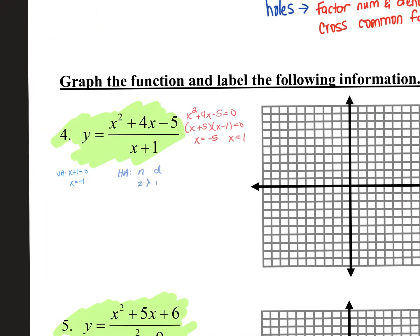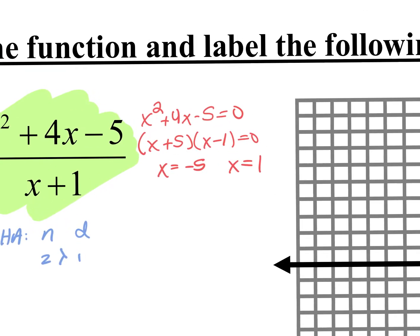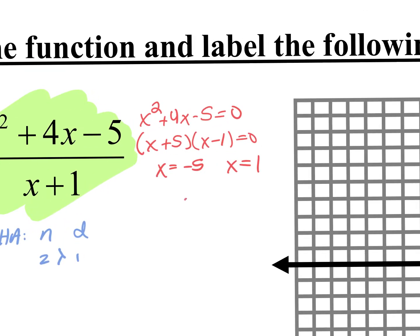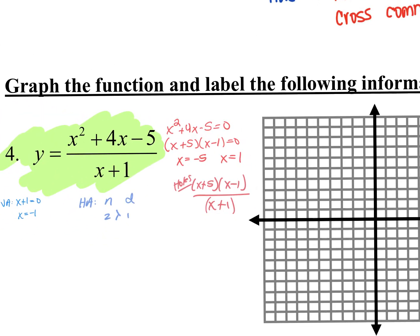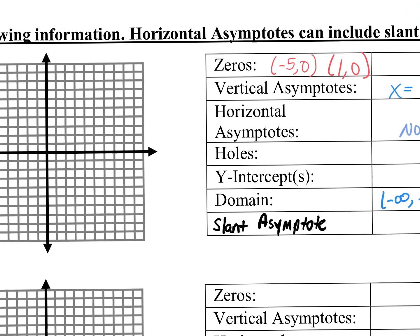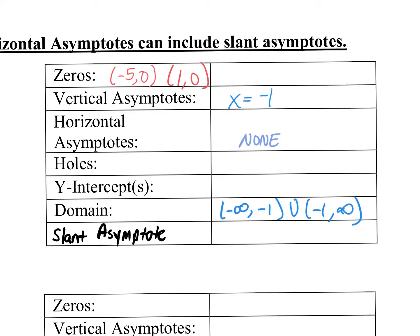Holes — how do we find holes? Factor the top and bottom. We already factored the top: x plus 5 times x minus 1 over x plus 1. Is there anything on the top and bottom that is exactly the same? No. So are there any holes? Nope — you would say none.